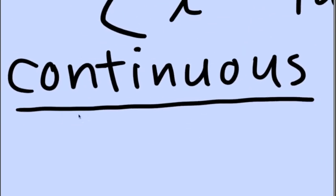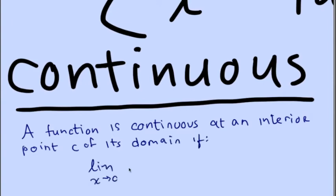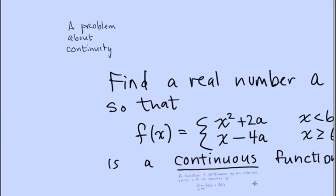We've defined continuous. Here's the definition: A function is continuous at an interior point c of its domain if the limit as x goes to c of f(x) equals f(c).